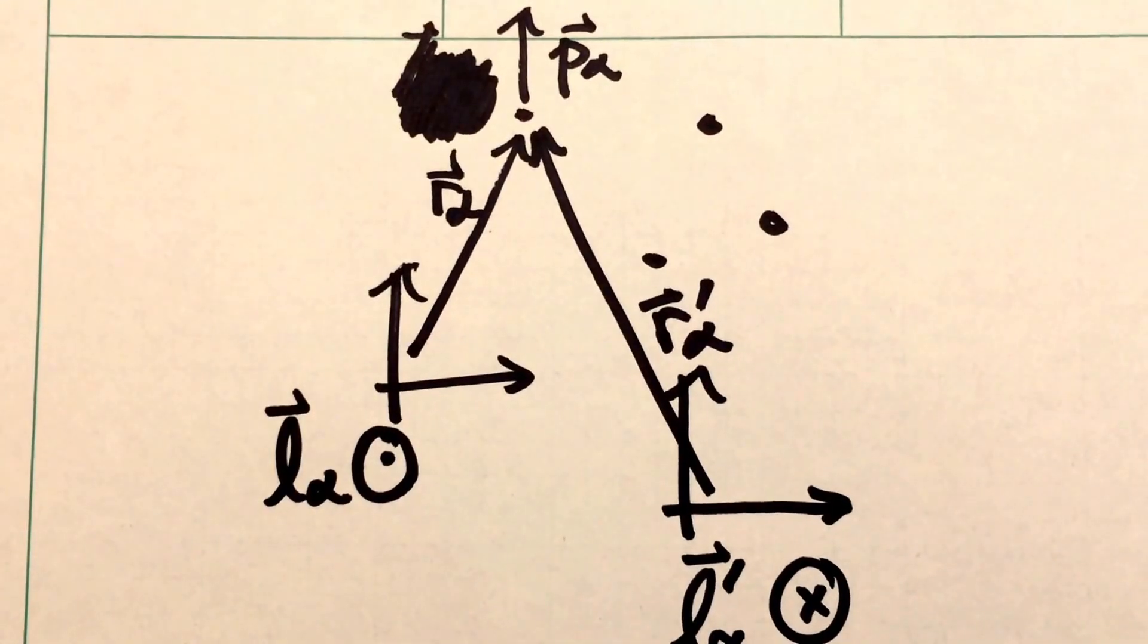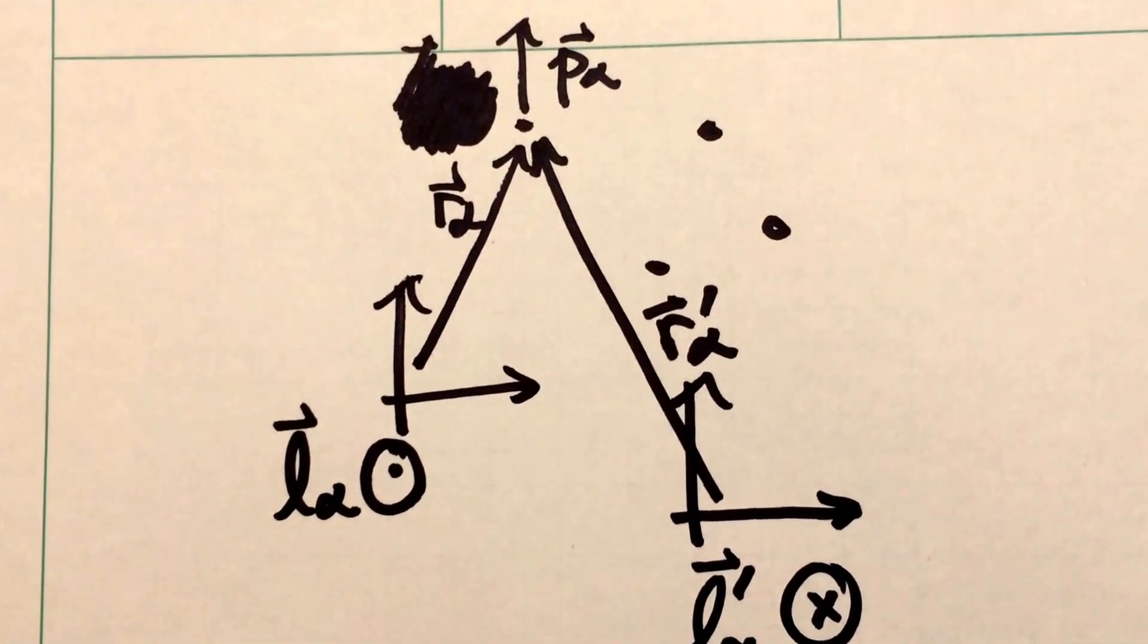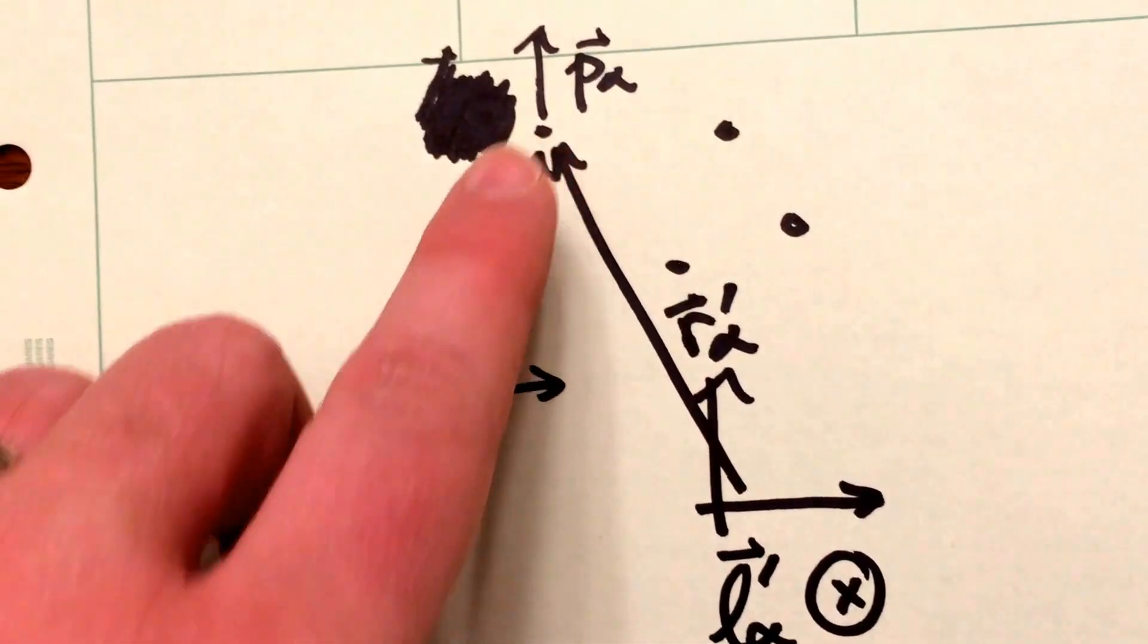Now one thing that's important to keep in mind is we can define the torque using any coordinate system we like. So for example, we can take a coordinate system over here and say here's all our particles in our system.